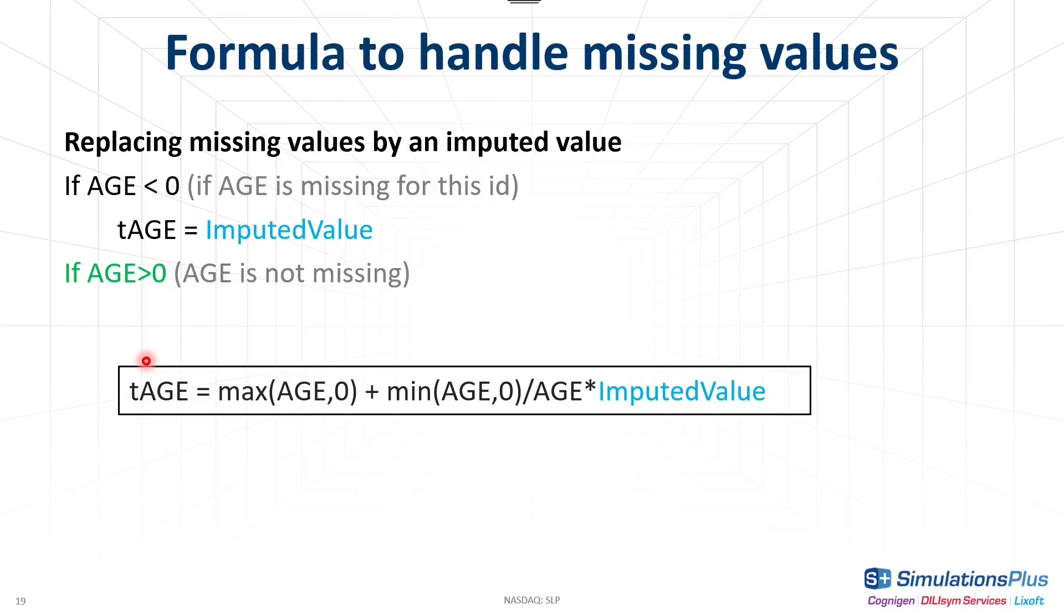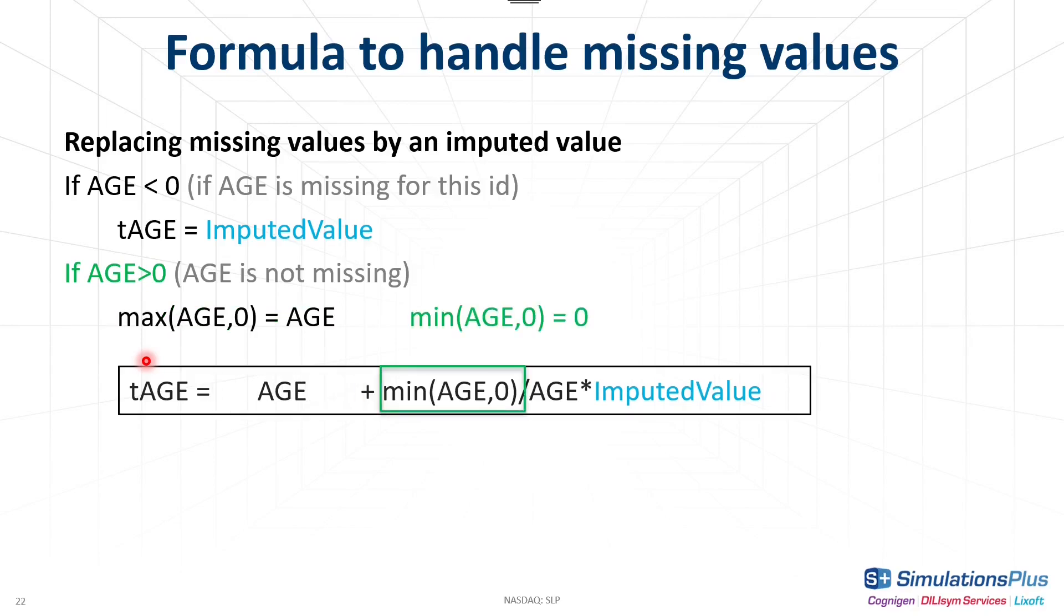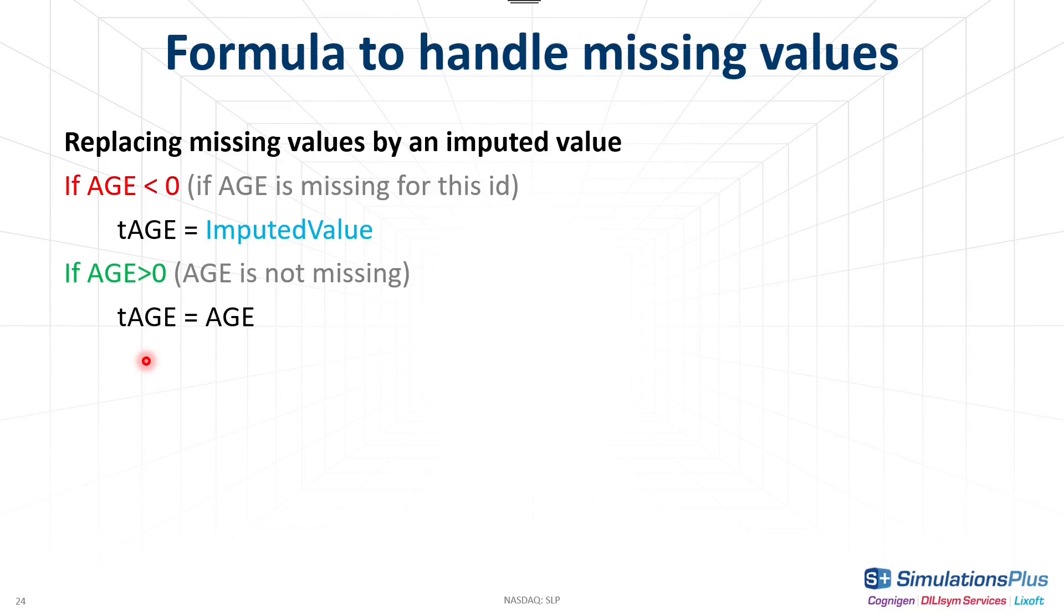When the age value is available, age is positive, so the max of age and zero is age, and the mean of age and zero is zero. So the term on the right cancels out, and the transformed age is equal to age, which is what we want.